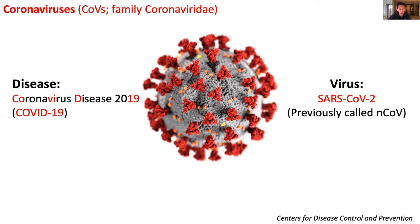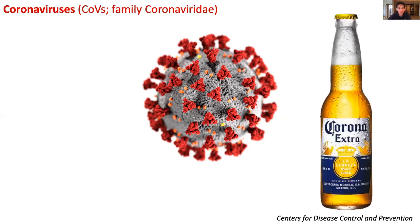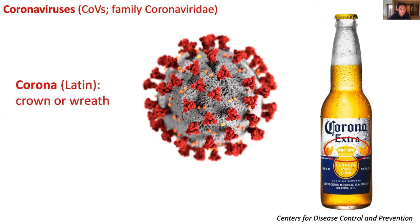So why are these viruses called coronaviruses? It's not because drinking corona beer will get you infected — that's not the case. Rather, corona is Latin for crown or wreath. When scientists first saw this virus under the microscope, it looked like a crown when viewed from above, because it is studded with spike proteins. These spike proteins are used by the virus to infect the host cells it wants to target.